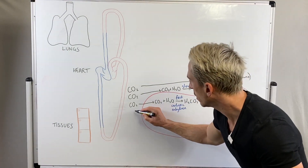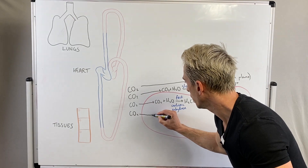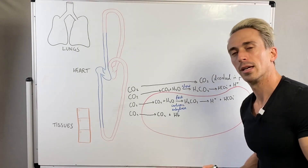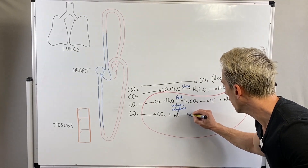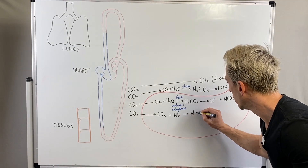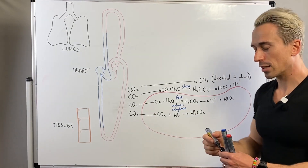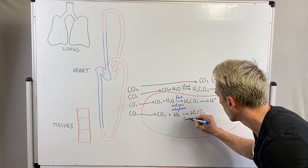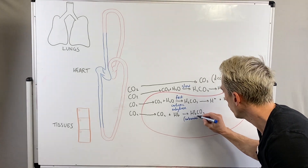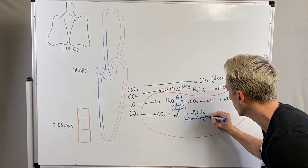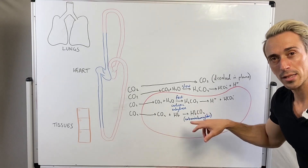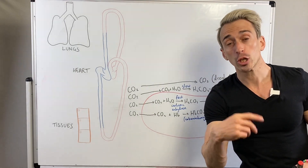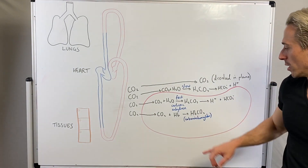There's another way carbon dioxide can be transported: when it gets into the red blood cell, it can actually bind straight to hemoglobin (Hb), forming carbaminohemoglobin — written as HbCO2. The reason it's called that is because the carbon dioxide doesn't bind to the heme portion like oxygen does; it binds to the amino acid portion, the globin portion. That's why it's called carb-amino-hemoglobin.